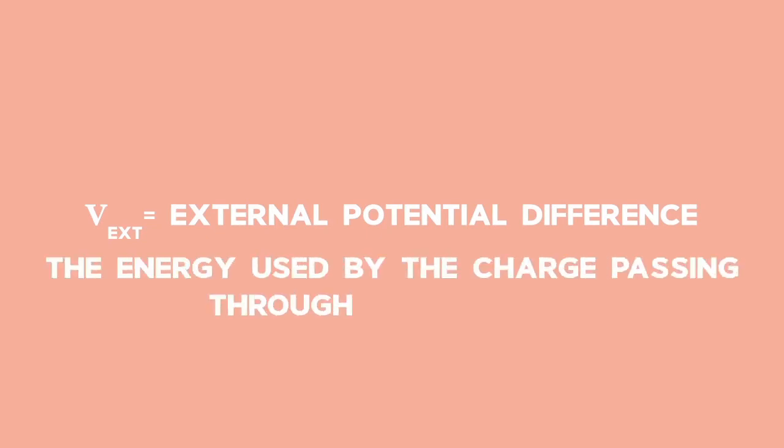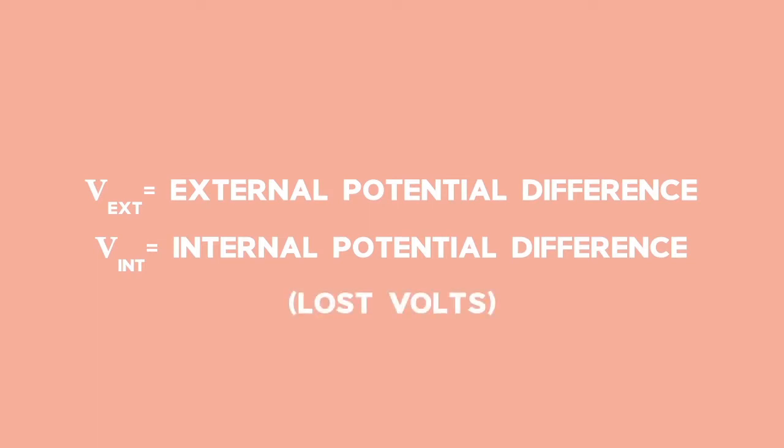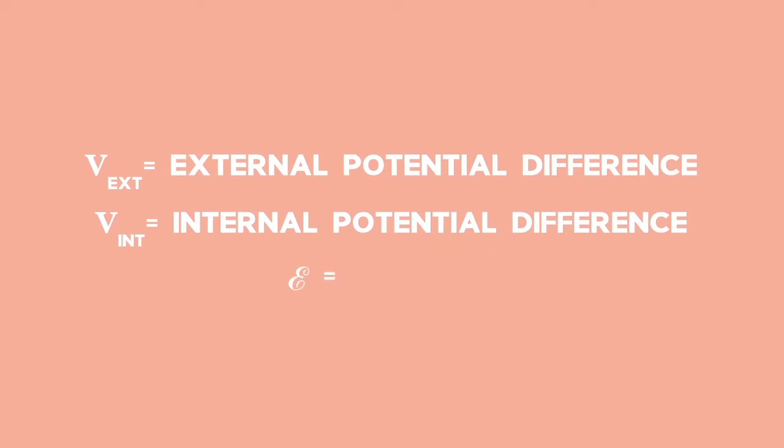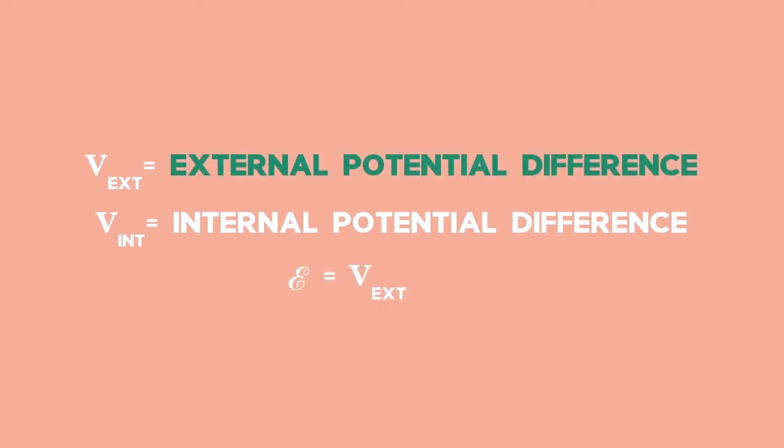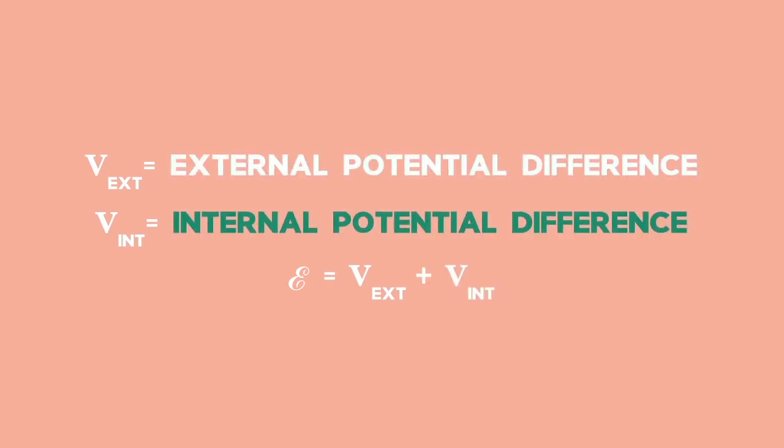The leftover electrical energy is referred to as the external potential difference. The energy lost is referred to as the internal potential difference, but is often called lost volts. The mathematical equation is: EMF is equal to the external potential difference plus the internal potential difference.